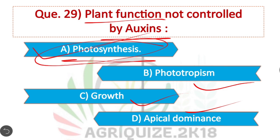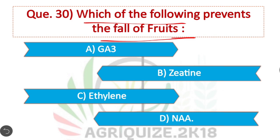Question 30: Which of the following prevents the fall of fruits? Option D is correct. NAA — naphthalene acetic acid — is responsible for preventing the fall of fruits.